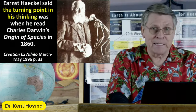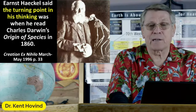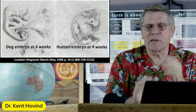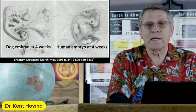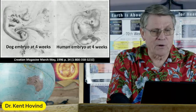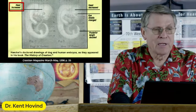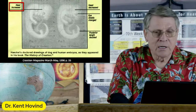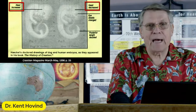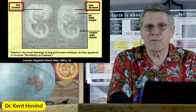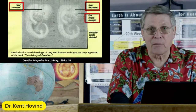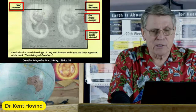Haeckel's fake drawings are still used today. He took a dog embryo at four weeks and a human embryo at four weeks and changed them — he increased the size of the head on the dog and decreased the size of the head on the human. This isn't bad artwork, this is lying. The eye details were changed, the length was changed. He did it deliberately. Haeckel's doctored drawings of dog and human embryos — on top are how they should have been; underneath are the fake drawings.